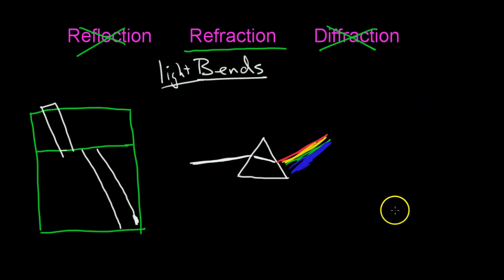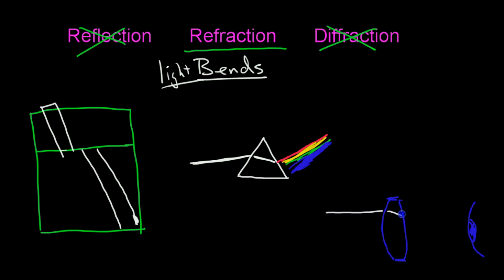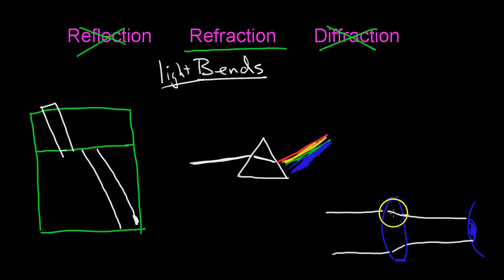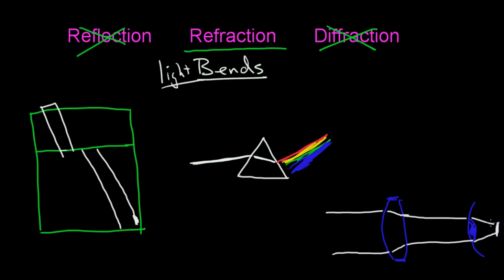Another important example is if you wear glasses. Here's the shape of your lenses, and here's your eye. When the light comes in, the lens makes the light bend and strikes your eye in such a way that you can see more clearly. It adjusts how the light is striking your eye, then it goes to the back of your eye, and you're able to see. So that's refraction.